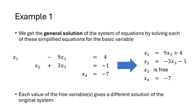The first equation contains the basic variable x1, so we solve that for x1 and get x1 equals 9x3 plus 4. The second equation contains the basic variable x2, so we solve that for x2 to get x2 equals negative 3x3 minus 1. x3 is a free variable, so we simply write x3 is free. And finally, the third equation contains the basic variable x4, and it's already solved for x4, so we write x4 equals negative 7.